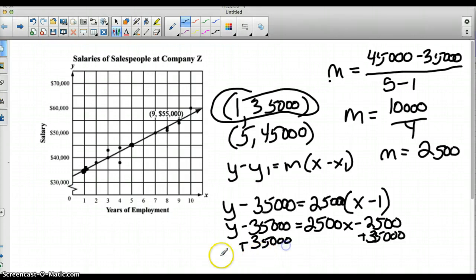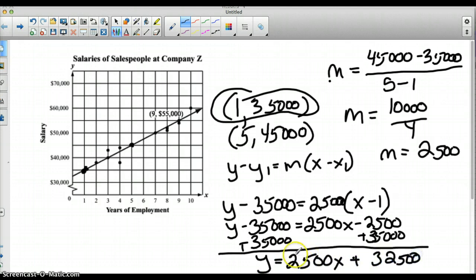And we end up getting our equation here, which is y equals 2,500x plus 32,500. And that would be fine to leave the equation in slope-intercept form like that, because when you use Excel, it's going to give you an equation similar to that.